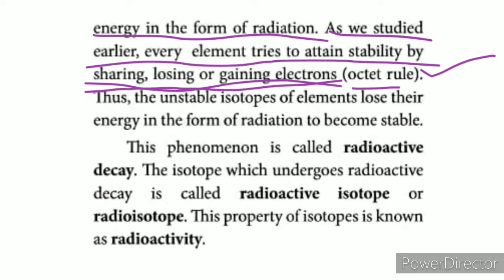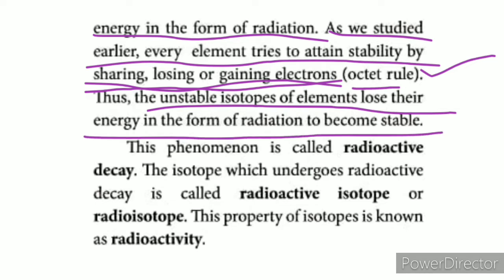Noble gases such as krypton, xenon, and radon already have a full outer shell — they are noble gases, stable. The remaining elements are not stable. Unstable isotopes of elements lose their energy in the form of radiation in order to become stable.